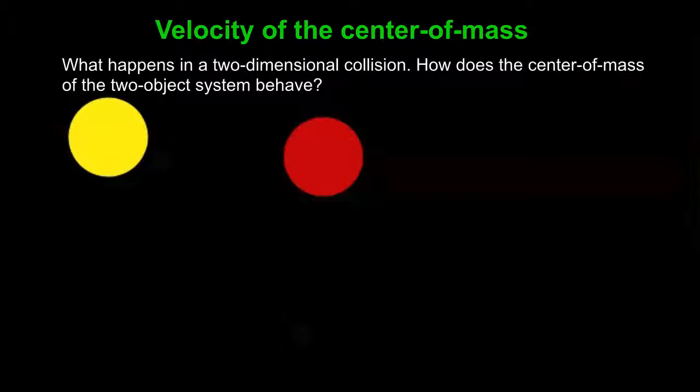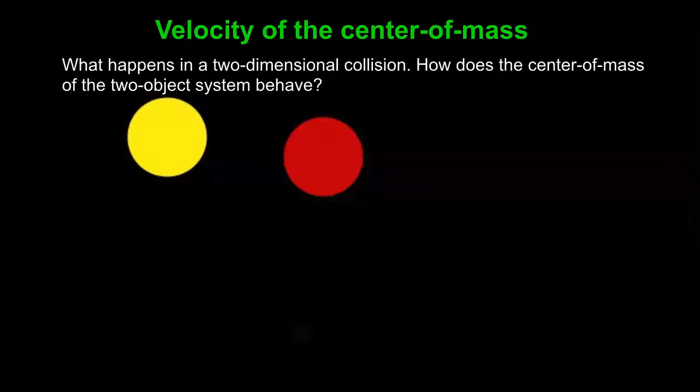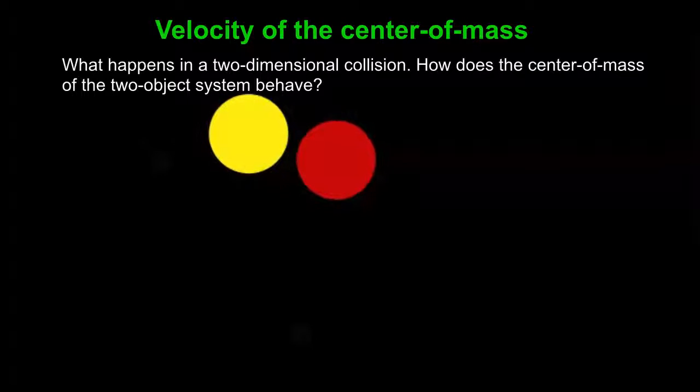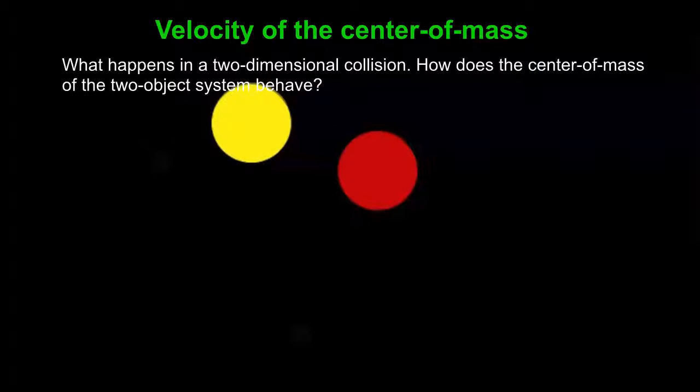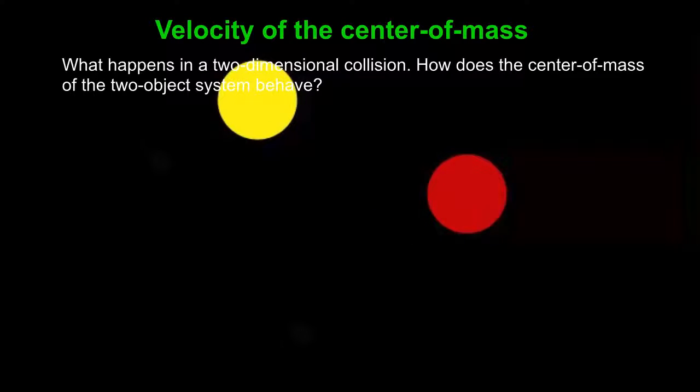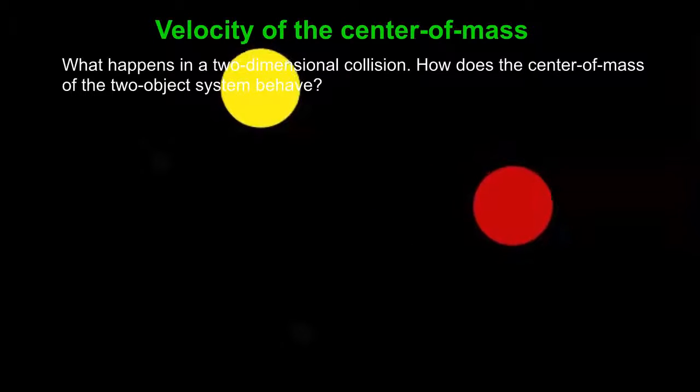Okay, what about a two-dimensional collision? Let's think about the center of mass now. So here the yellow object is going to come in along one line. It's going to go off along a different line. And that's a totally different line than the red object is going at. So what about the center of mass?